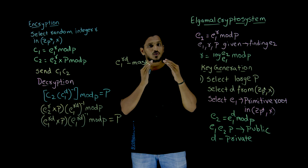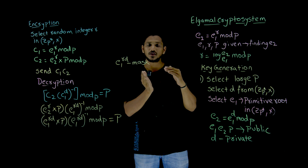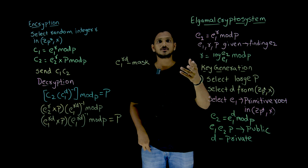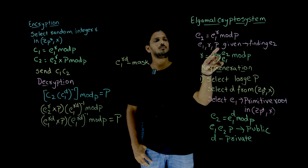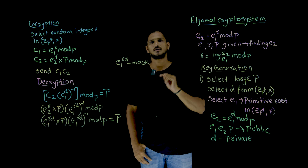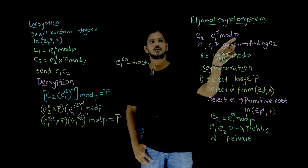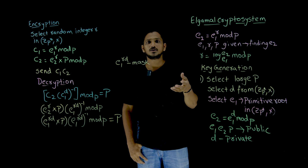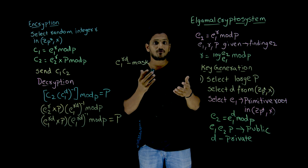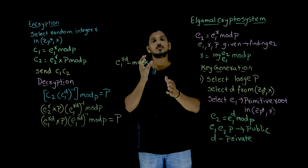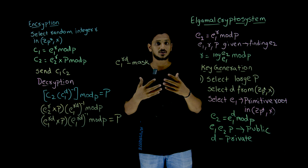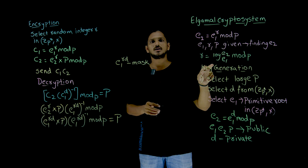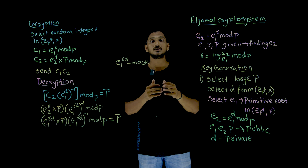The exponential and logarithmic problems we discussed in previous classes are going to be used here — the entire concept is based on that. Let's refresh: suppose e1, r, and p are given, where p is a prime number. Then e1 power r mod p equals e2. If e1, r, and p are given, identifying e2 is very easy because it is an exponential problem — we can apply the fast exponential method and solve it in polynomial time. But if e1, e2, and p are given, identifying r is very difficult because it is a logarithmic problem.